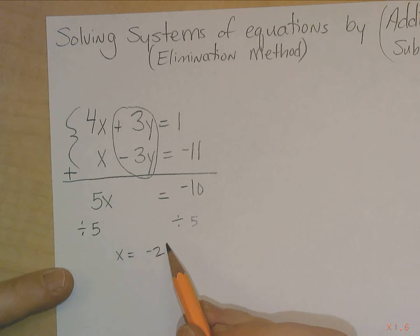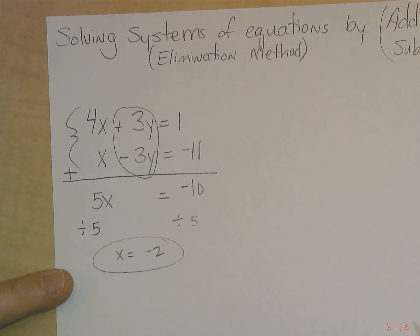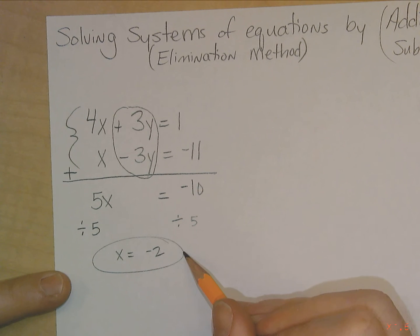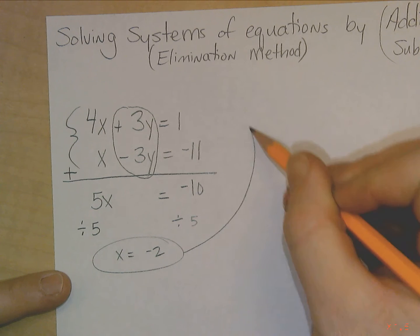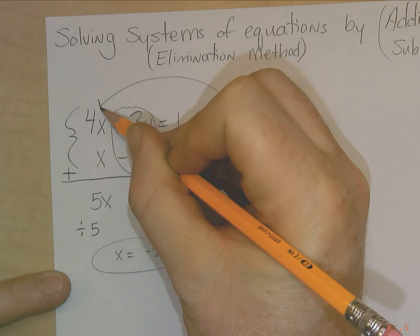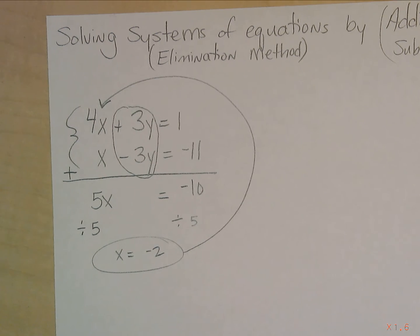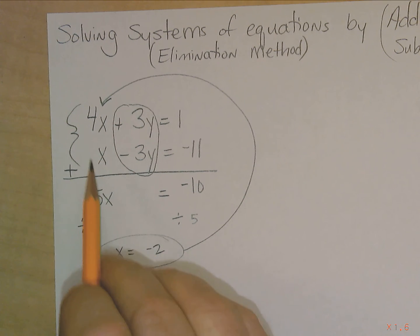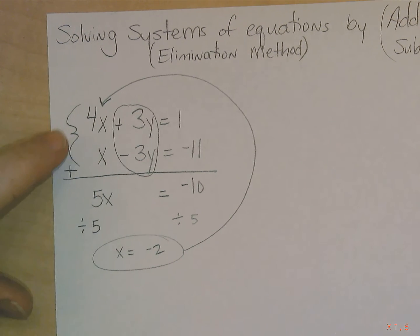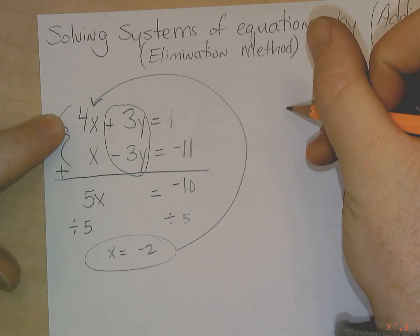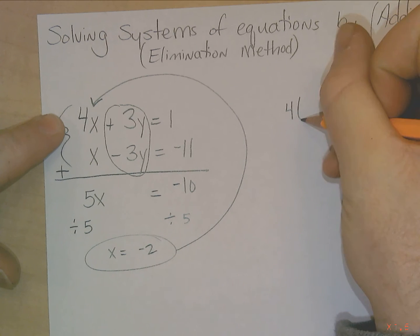So once you find the value for x, you can find the value for y fairly simple. Just take the value for x and plug it in to one of the equations. So it could be this one or this one. Either one would work, but let me just show you both, just so that you can see that it does work.